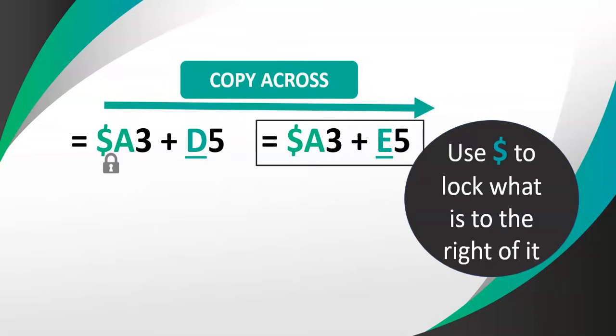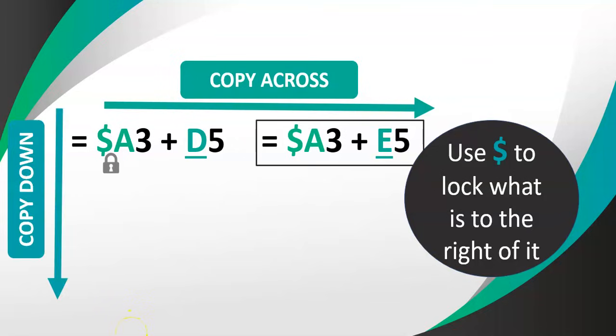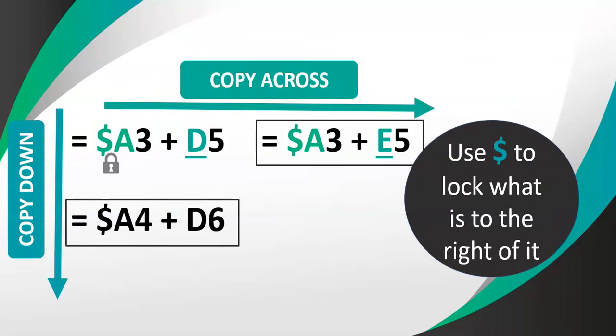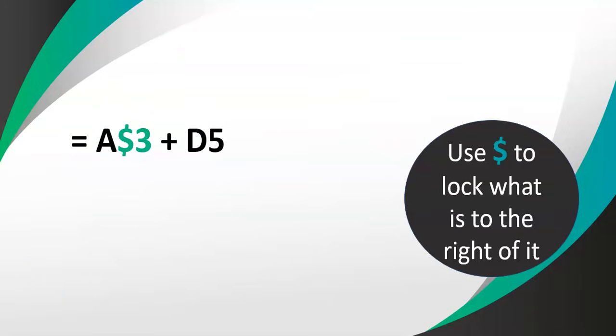Only the cells referenced with a dollar will be locked, and it's only what is to the right of the dollar that gets locked. For example, if I copy this formula down, that dollar has locked the A, and when you copy down it's the numbers that change — not the letters — so that dollar doesn't affect the number in that case. The dollar locks whatever is to its right.